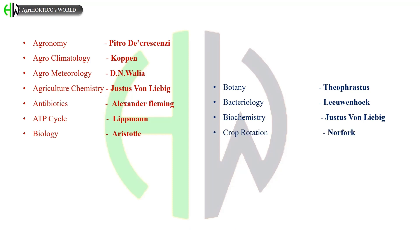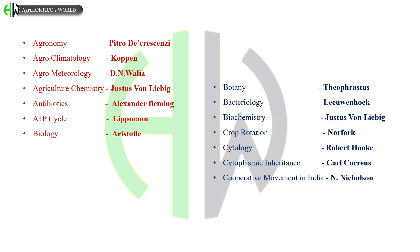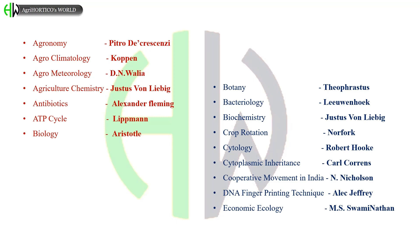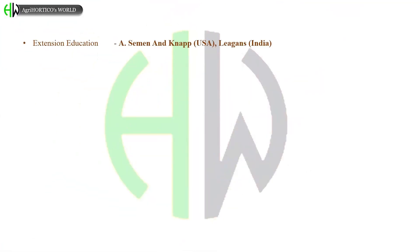Father of Crop Rotation: Norfolk. Father of Cytology: Robert Hooke. Father of Cytoplasmic Inheritance: Karl Correns. Father of Cooperative Movement in India: Nicholson. Father of DNA Fingerprinting Technique: Alec Jeffreys. Father of Economic Ecology: M.S. Swaminathan.